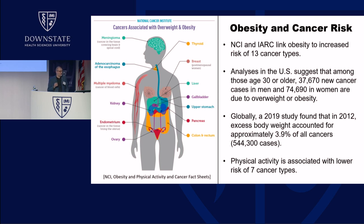Physical activity is associated with lower risk of seven types of cancers. Interestingly, it appears that the way physical activity prevents cancer is not only by lowering the risk for obesity or lowering fat mass. Physical activity has protective effects outside of just burning calories and preventing overweight or obesity.